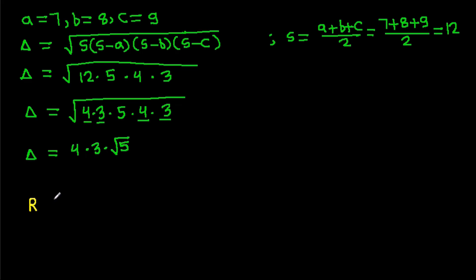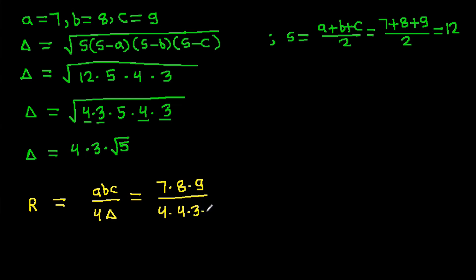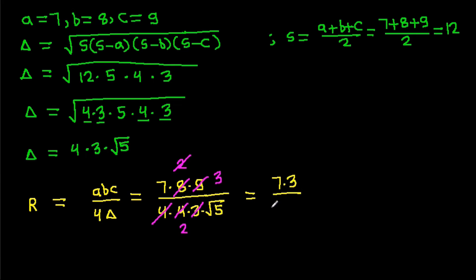So radius r equals abc/(4Δ) equals (7 × 8 × 9) / (4 × 12√5) equals 504 / (48√5) equals 7 × 3 / (2√5), which gives r equals 21/(2√5). All three methods confirm the same answer.